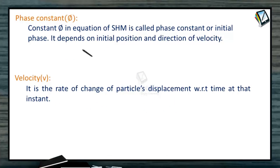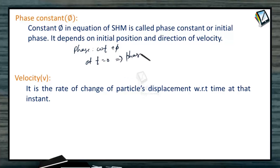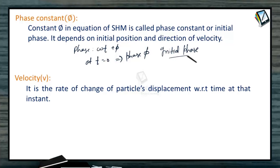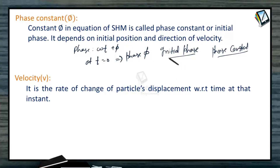What is phi? Since phase is omega t plus phi, at t equal to 0 the value of the phase is phi. So phi is the initial phase of the particle, also called the phase constant. How do you decide the value of phi? It depends on the choice of the instant t equal to 0.